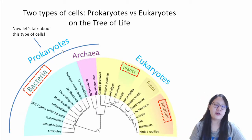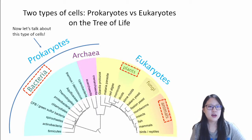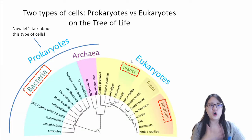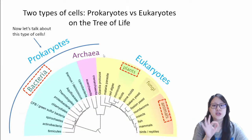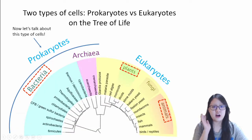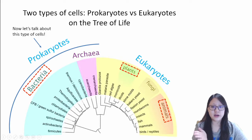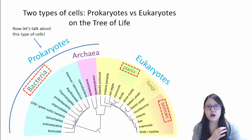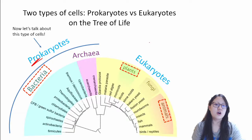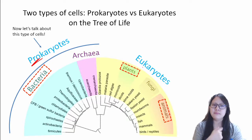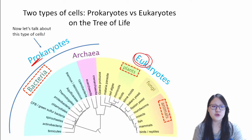Just a reminder of what I've said beforehand. All of life on Earth can be categorized into three groups. You are either a bacteria, an archaea, or a eukaryote. Now, bacteria and archaea are all under this group called prokaryotes. Whereas everything else, like plants, animals, fungi — we are all eukaryotes.